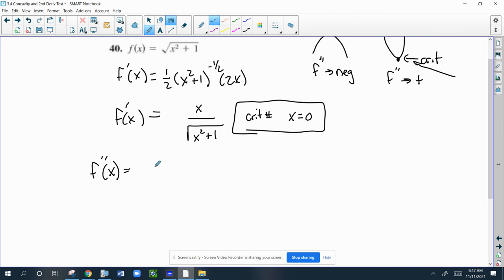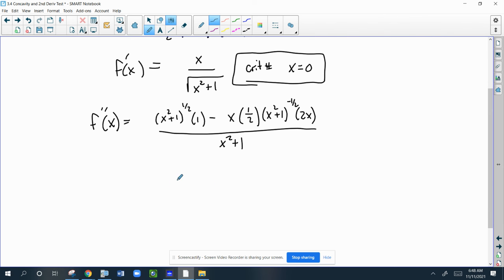So I'm going to have to find the second derivative. It's the bottom times the derivative of the top minus the top times the derivative of the bottom, all over the bottom squared. So we're going to have to clean it up a little bit.